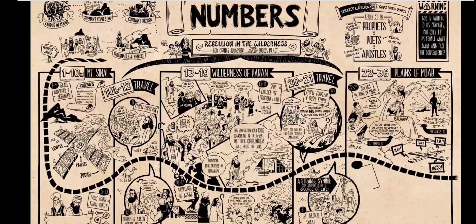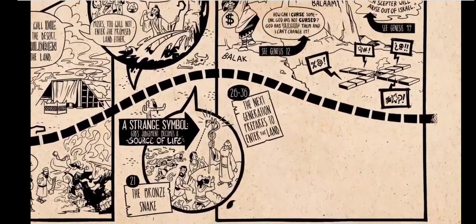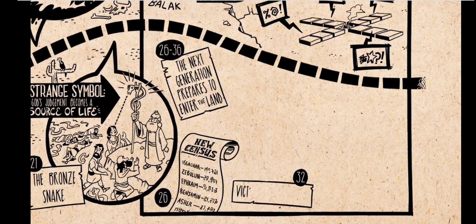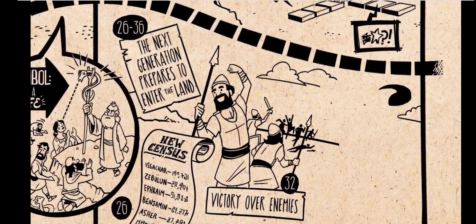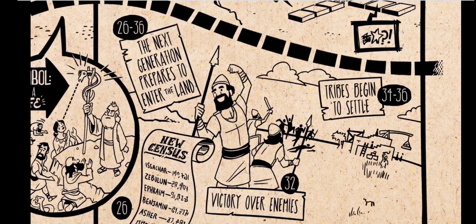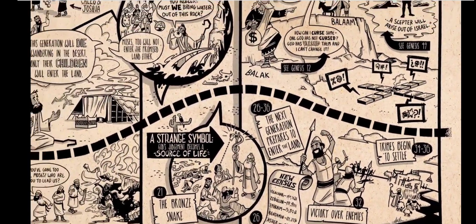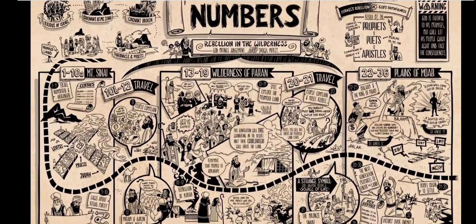After this, the rest of the book focuses on the children of the wilderness generation and they begin preparing to inherit the promised land. They take another census of the new generation, then go on to win a number of battles with the people groups around them, and a few tribes even begin to settle in the promised land. So the book ends with the new generation poised to enter into the land, and Moses is about to deliver his final words of wisdom and warning. That's what the book of Numbers is all about.